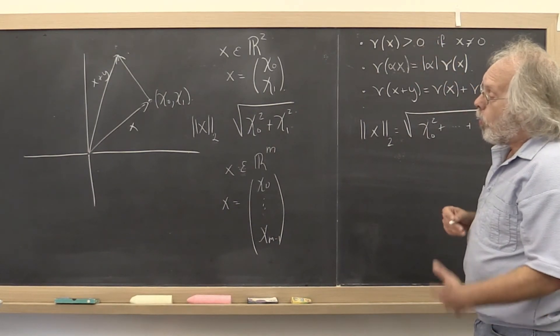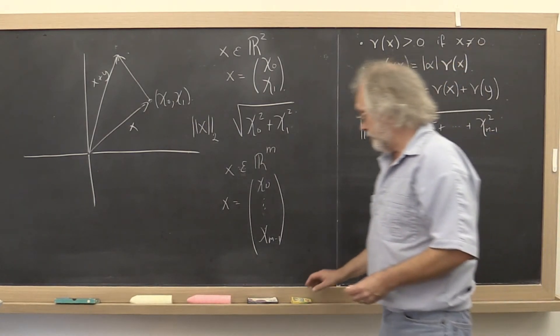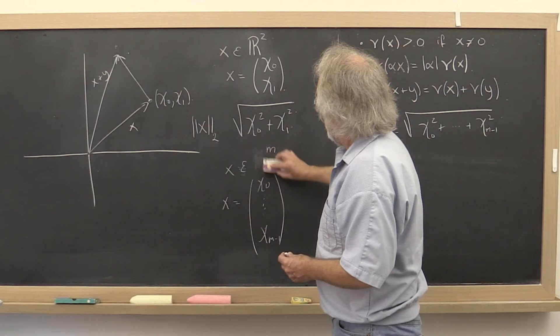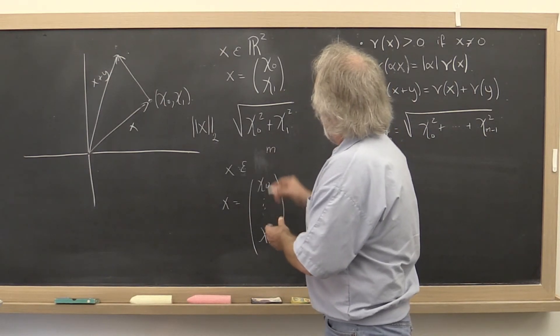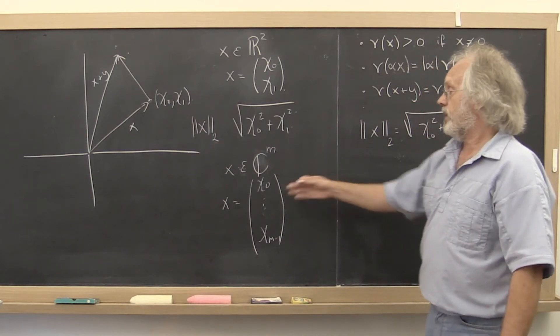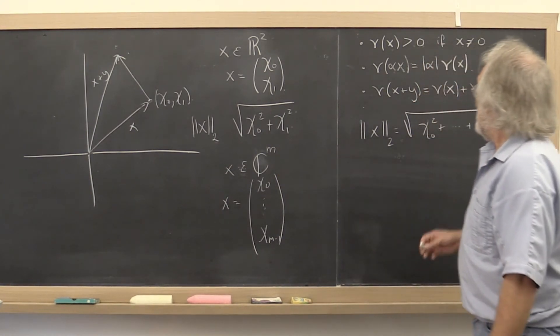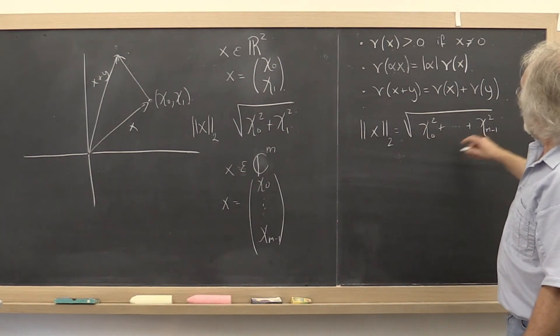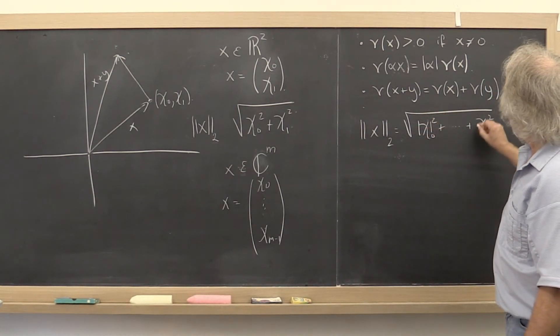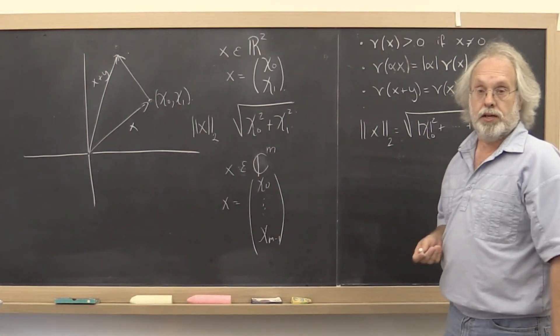Now, we sort of said that we're going to mostly deal with complex-valued vectors and matrices. And therefore, we want to know how to define the 2-norm for a vector in Cᵐ. And there we need to be a little bit more careful. There we need to take the absolute value of each of the entries because the entries may be complex-valued.